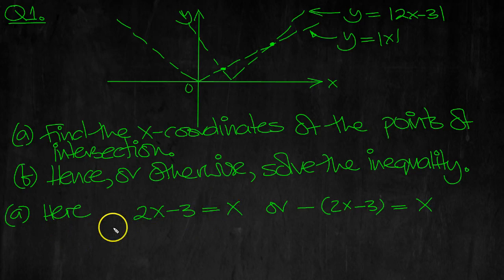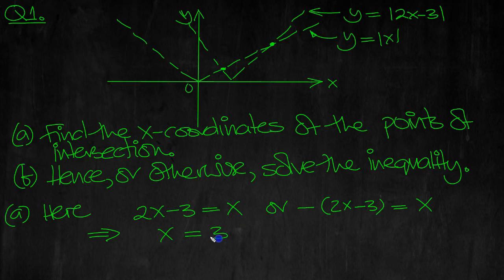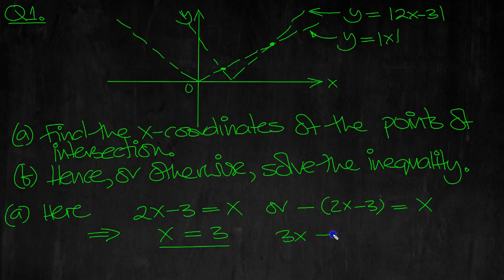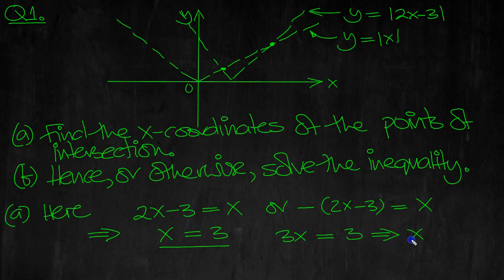So the first equation: move the x over — 2x minus x is x — and move the 3 over, we get x equals 3. For the second one, we get minus 2x, so that gives you 3x on that side. So 3x equals 3, which means x equals 1.